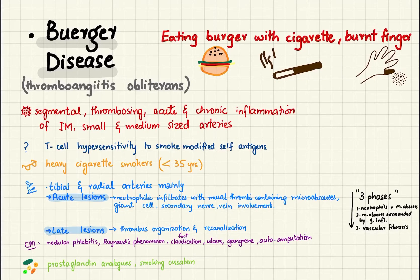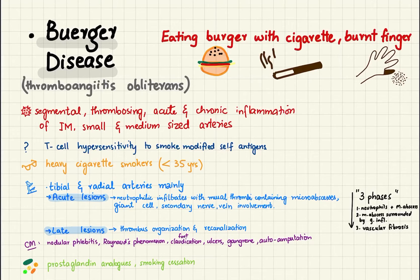Next is Buerger's disease — remember it by the mnemonic of eating a burger with a cigarette, leading to burning of fingers. It is associated with T-cell hypersensitivity to smoke-modified self-antigens and is common in heavy cigarette smokers. The 'burnt finger' refers to auto-amputations and gangrene. It also has two types of lesions — acute and late — and remember the micro-abscesses in this case.